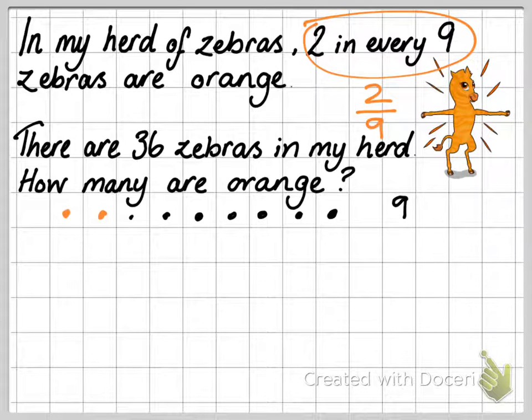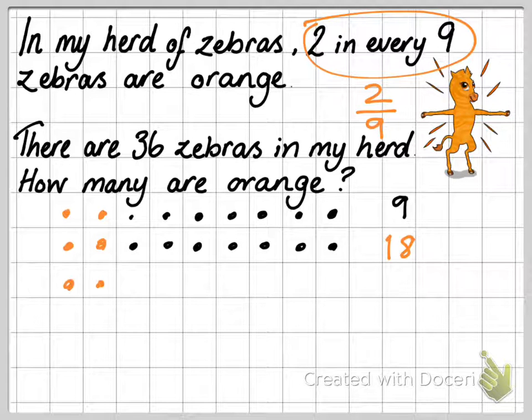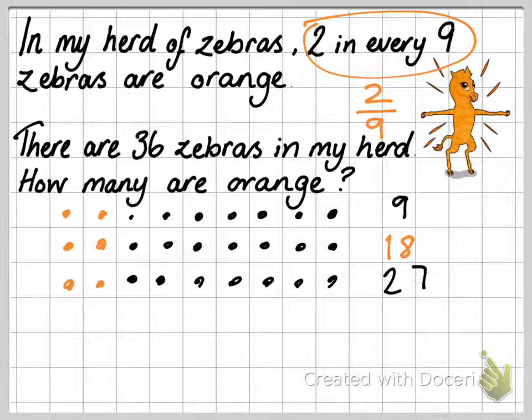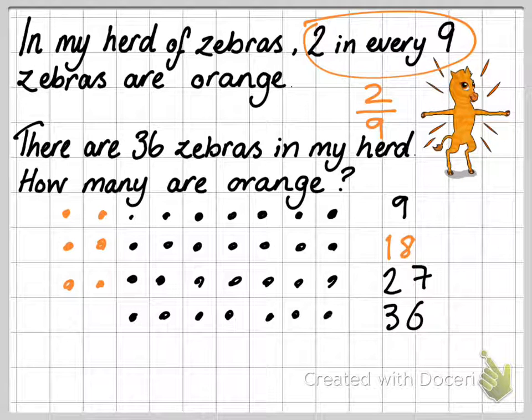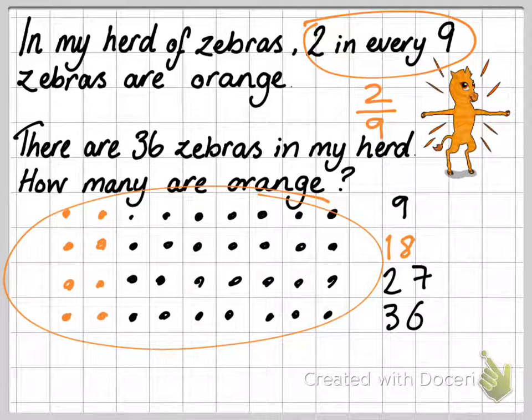So at the minute, I have 9 zebras, but it says that I have 36. So I have to repeat the pattern again until I get to 36. There's 7 black zebras and 2 orange. 9 and another 9 makes 18. So here's another 2 orange zebras and 1, 2, 3, 4, 5, 6, 7. That would make 27. So I think I just need 1 more set now. All together, I have 36 zebras.